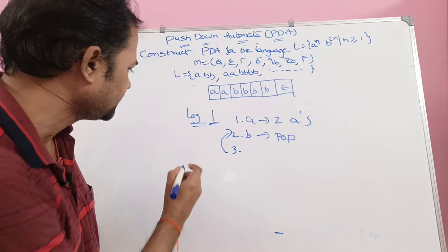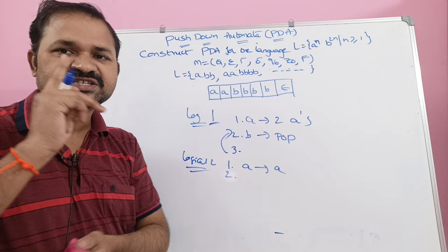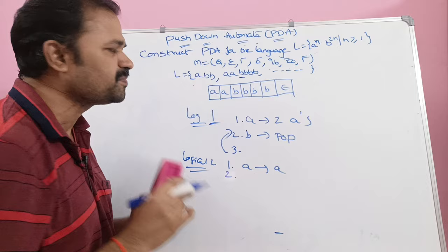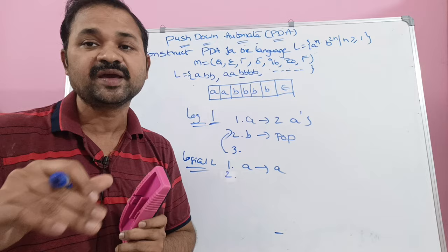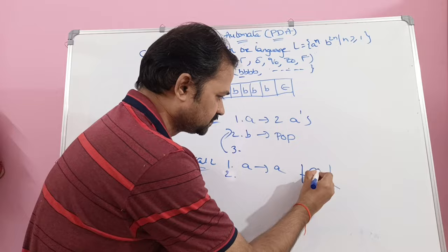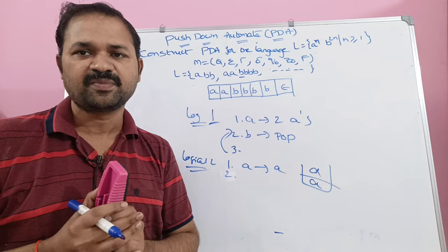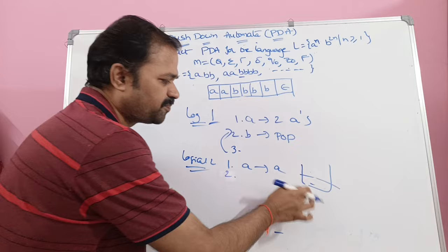Now let us see logic 2. If we read 'a', then push 'a' onto the stack. Whereas since b's are double, for the first b, don't perform the pop operation. For the second b, perform the pop operation. Likewise for the third b, don't perform any pop operation; for the fourth b, perform the pop operation. For example, taking input string aa bbbb: after reading 2 a's the stack contains 2 a's. Then for the 4 b's — skip first, pop on second, skip third, pop on fourth.